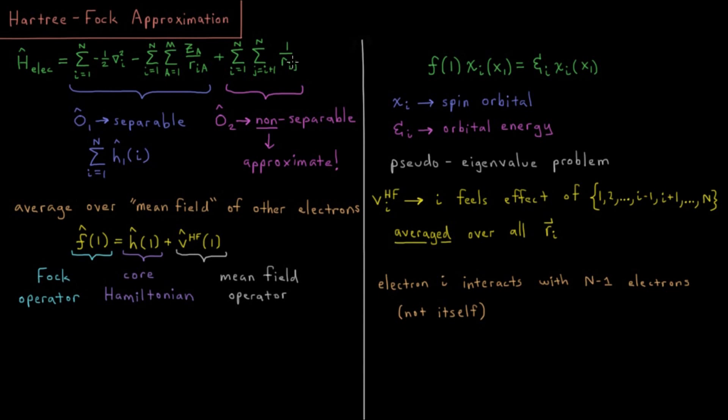So I mentioned there that electron i interacts with n minus one electrons and not itself. The consequence of this is this mean field operator actually depends on what all of the other spin orbitals are. And thus, you can't just solve this eigenvalue equation on its own because you have to simultaneously solve this for all of the electrons.